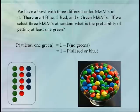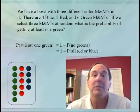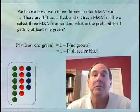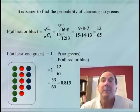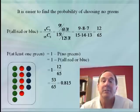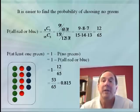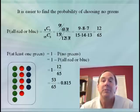Consider this example with a bowl of M&Ms. Suppose we have 4 blue, 5 red, and 6 green M&Ms. If we reach in and grab 3 at random, what's the probability of getting at least 1 green? Note: whenever you see the words 'at least' or 'at most' in a problem, you might want to consider looking at the complement. The complement of getting at least 1 green is getting no greens, meaning everything we choose comes from the 9 remaining red and blue M&Ms. The probability of no greens is C(9,3) divided by C(15,3), which reduces to 12 over 65. So the probability of at least 1 green is 1 minus 12 over 65, or 53 sixty-fifths, which is about 0.815 — roughly an 81% chance.